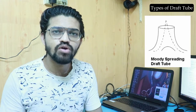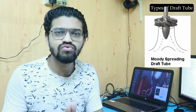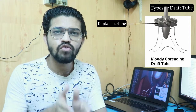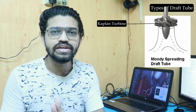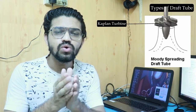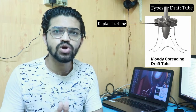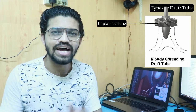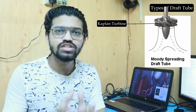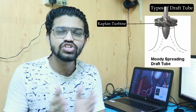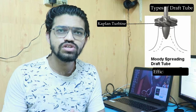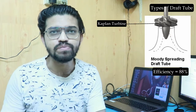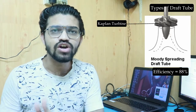The last type is the moody spreading tube, also known as the hydracone. This type is especially suitable for the Kaplan turbine, which has maximum kinetic energies at exit. This draft tube splits the flow into two different parts — it has one inlet and two outlets — to divide the kinetic energy. The efficiency of this type is around 88%, and it is used in vertical shaft turbines.